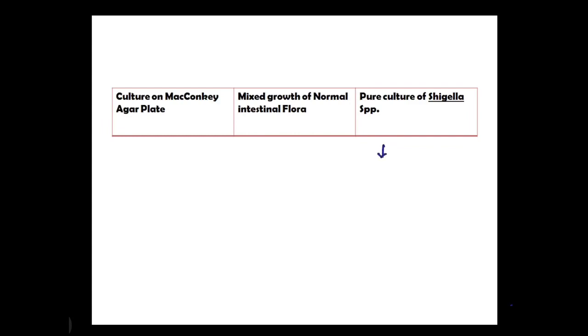The last difference is the presence of mixed motile organisms in the microscopic stool slide in amoebic dysentery, whereas in bacillary dysentery we see non-motile organisms predominating, because Shigella is non-motile. This was all about amoebic dysentery and bacillary dysentery and their differences.